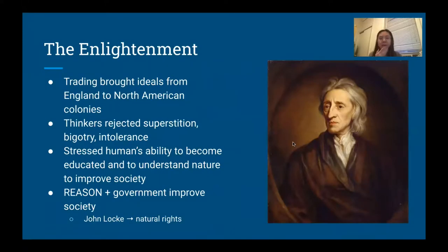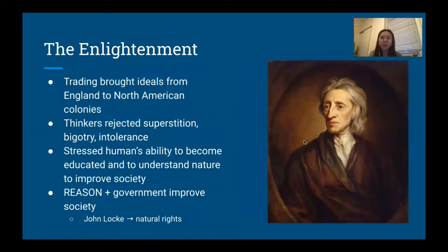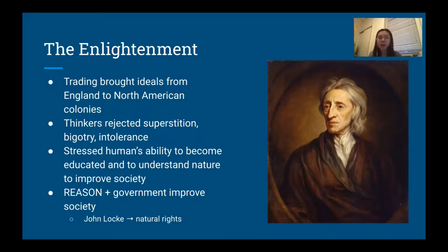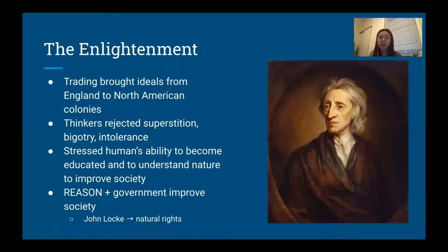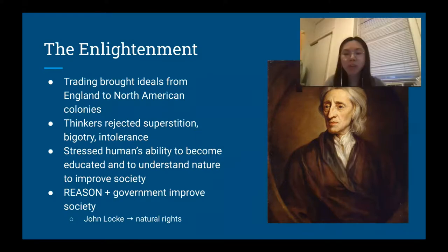We also have the Enlightenment. John Locke was a key figure during the Enlightenment in Europe. These ideals spread to the North American colonies through transatlantic trade. Enlightened thinkers rejected superstition, bigotry, and intolerance. They stressed humanity's ability to be educated, understand nature, and improve society. There was a big emphasis on reason and on the idea that government could and should improve society. John Locke is known for his idea of natural rights — the concept of life, liberty, and happiness found in the Declaration of Independence can be traced to Locke's writings.